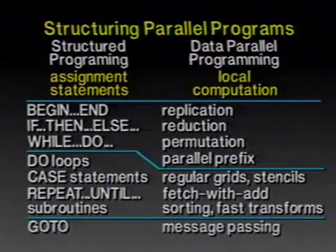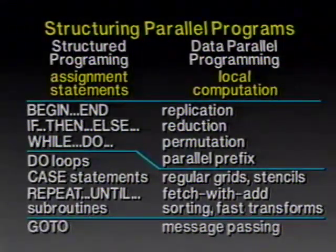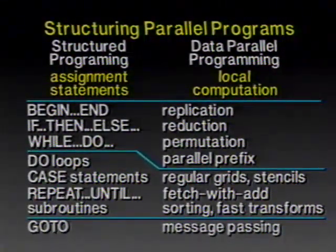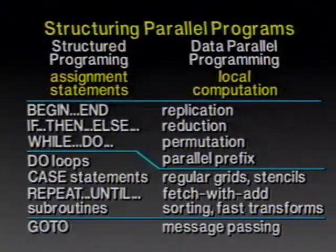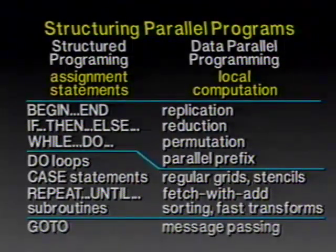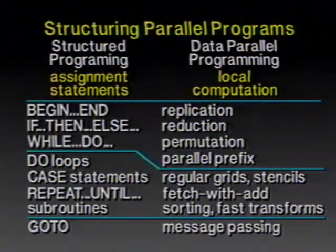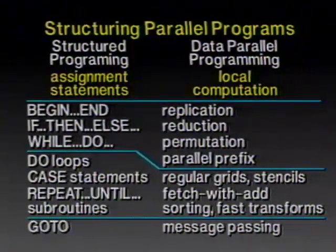The third case is permutation, where the amount of data isn't getting bigger or smaller but the data is being rearranged. Examples are passing a piece of data to the nearest neighbor within a grid, whether two-dimensional, three-dimensional, or whatever. It might be an irregular permutation in a finite element analysis, or it might be completely wild, driven by the content of the data — a good example is sorting, where the very purpose is to permute the data and you can't tell ahead of time what the pattern will be. The fourth kind is parallel prefix, which puts out as much data as it takes in, but like replication and reduction, each input contributes to many outputs and each output depends on many inputs.